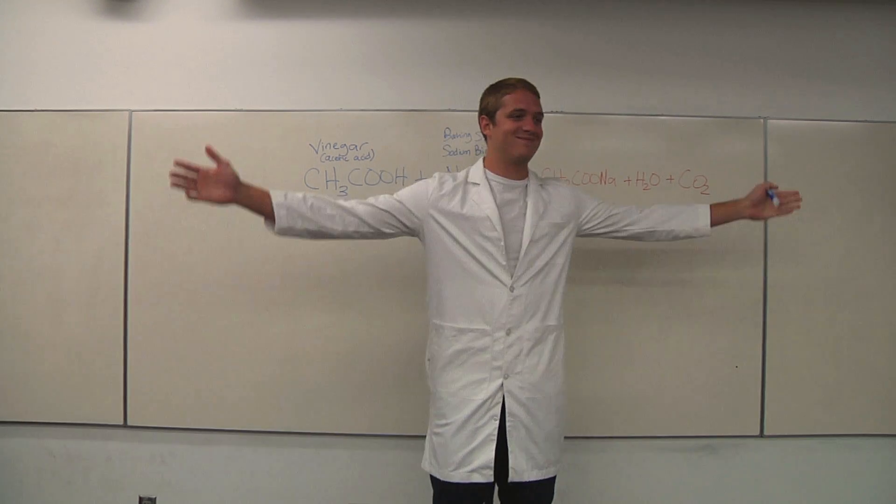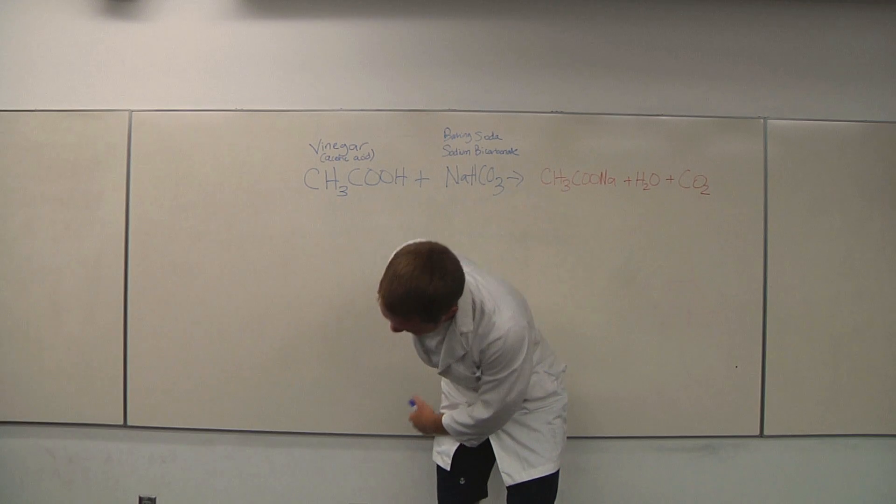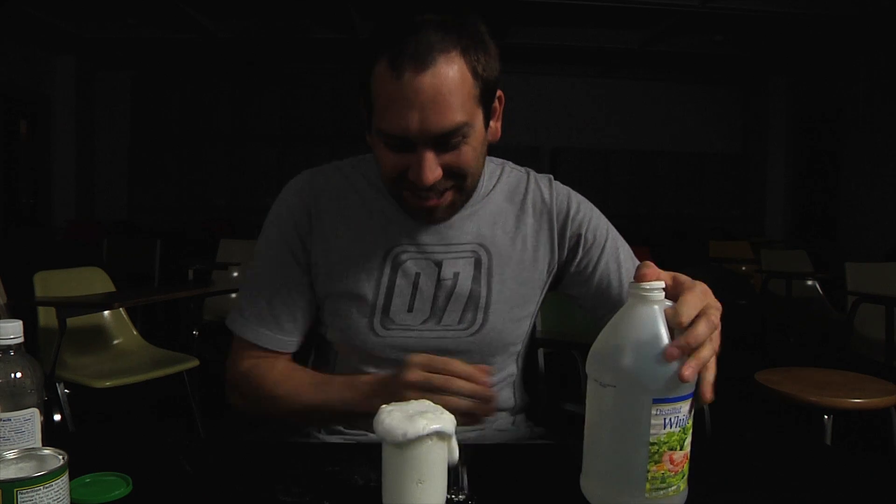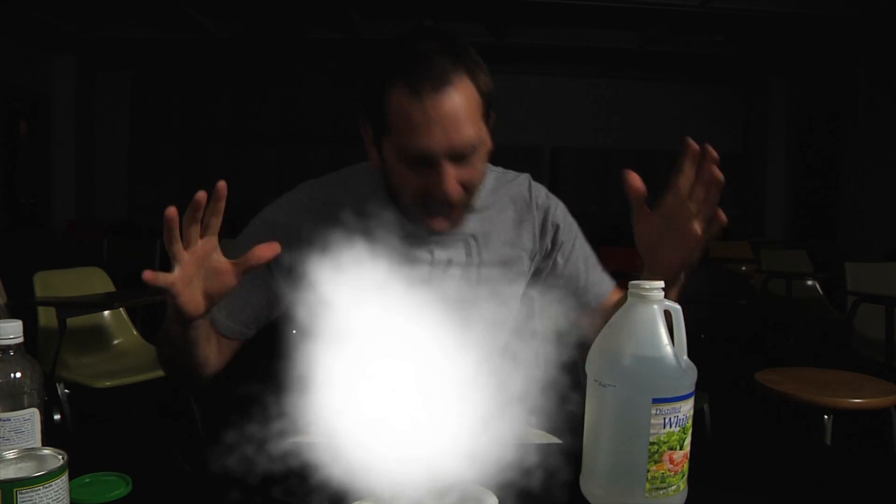Scientists may recreate this experiment to see if they achieve similar results. The results may bring up a new question that other scientists can answer. The data collected from the previous experiment will then be used to help form the new hypothesis. Either way, the scientific method provides a universal way for scientific questions to be answered through a repeatable experiment.